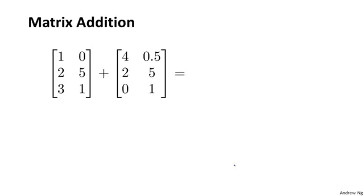Let's start with an example. Given two matrices like these, let's say I want to add them together. How do I do that? And so what does addition of matrices mean?